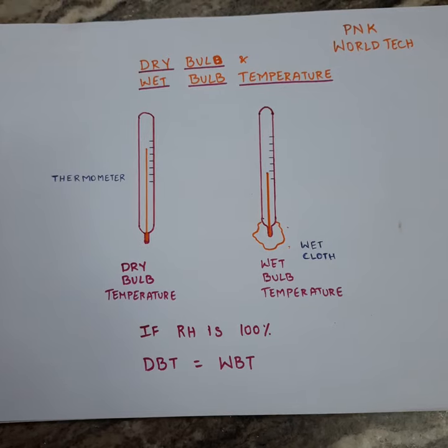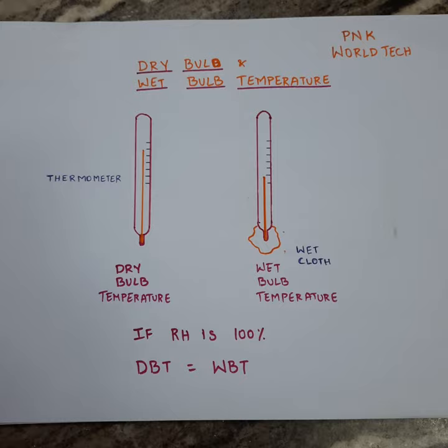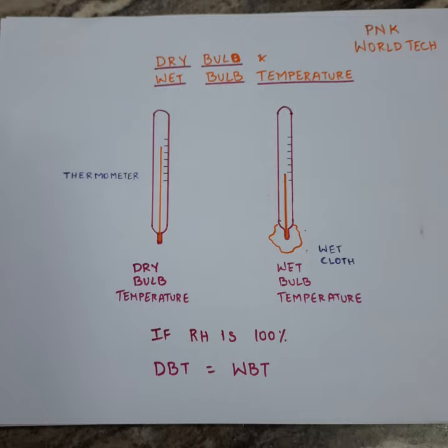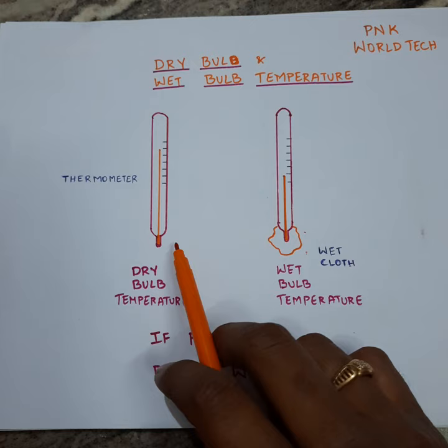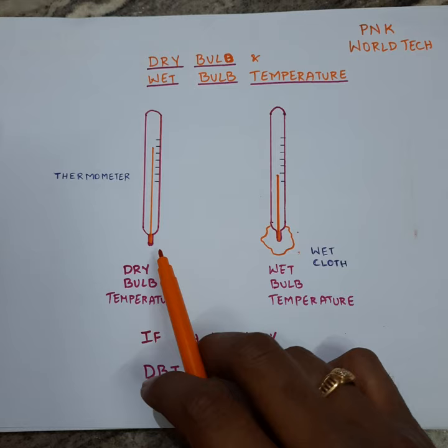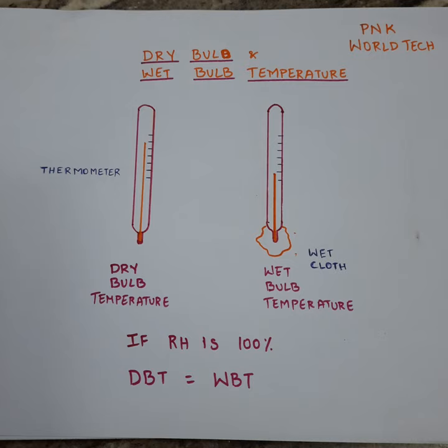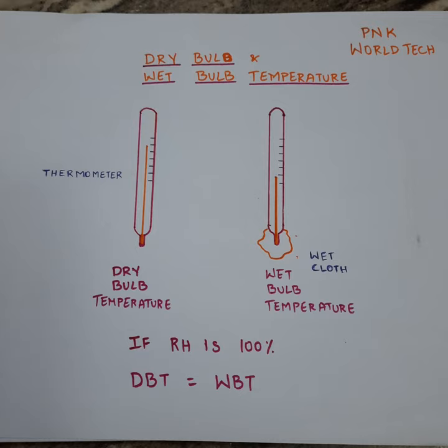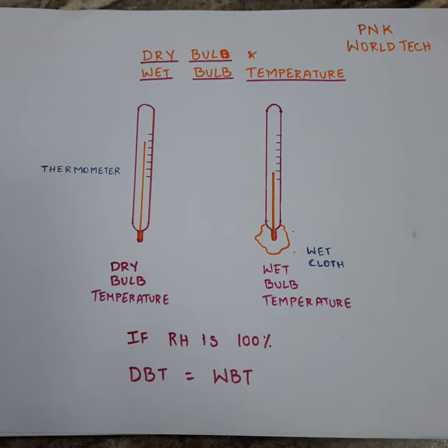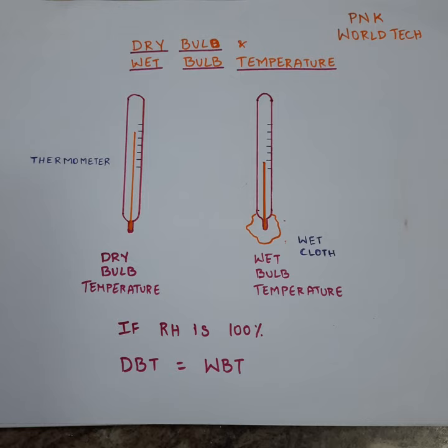Hello friends, today we will discuss dry bulb temperature and wet bulb temperature. Dry bulb temperature is the temperature of the ambient air which is exposed freely to the thermometer. In this case, the condition of the bulb is dry — moisture-free air is exposed to the thermometer. We have to ensure that dry bulb temperature should be free from radiation and moisture.